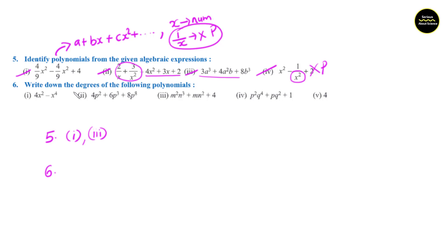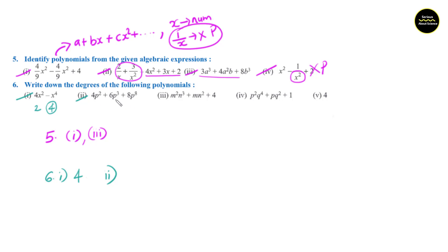Section number 6: write down the degrees of the following polynomials. Degrees are the greatest power of a variable in an expression. Question number 1: 4h square minus h raised to 4. The power of h square is 2 and the second term is 4. The highest power is 4. So the degree of question 1 is 4. Second question: 4p square plus 6p cube plus 8p raised to 8. Powers are 2, 3, and 8. The highest is 8. The degree of question 2 is 8.